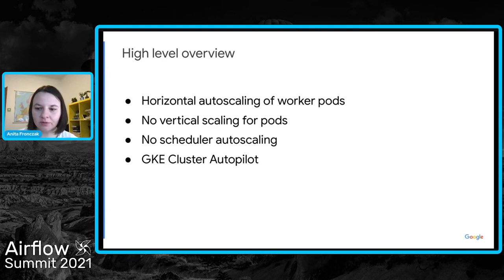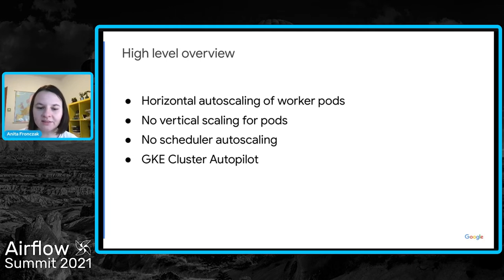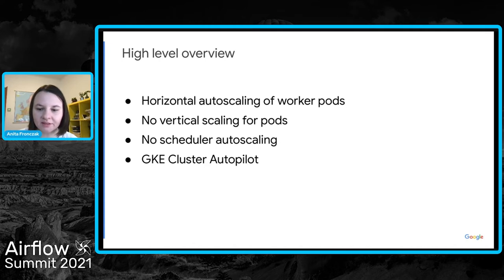Auto scaling helps your applications gracefully handle increases in traffic and reduces cost when the need for resources is lower. GKE implements the full Kubernetes API including auto scaling. GKE offers horizontal pod auto scaling, controlling the number of pods, and cluster auto scaling, controlling the node pool. We implemented horizontal auto scaling of worker pods, meaning the number of workers automatically adjusts to load. We do not offer vertical auto scaling — worker resource requirements like CPU, memory, and disk do not change automatically — but you can change worker resources manually after the environment has been created.